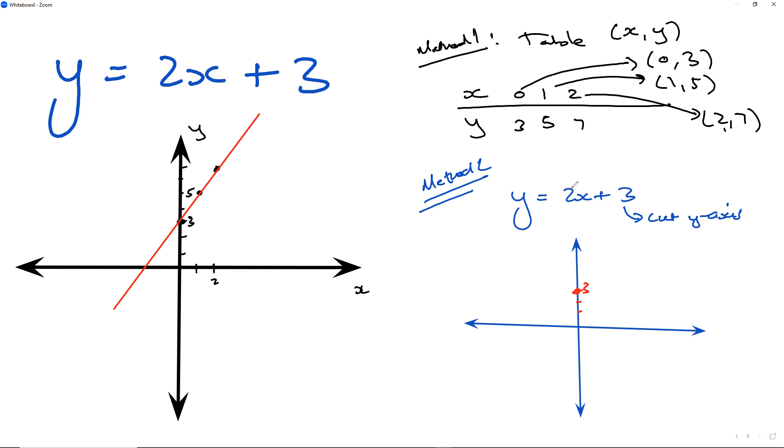And then from there we got this change in y over change in x, which is rise over run. It'll be 2 over 1, which means that you go up 2 and you go right 1 because they're both positive.